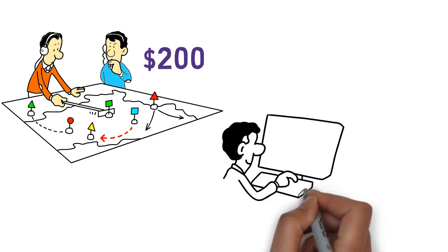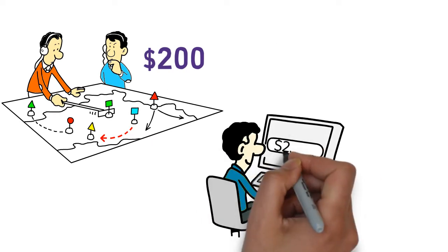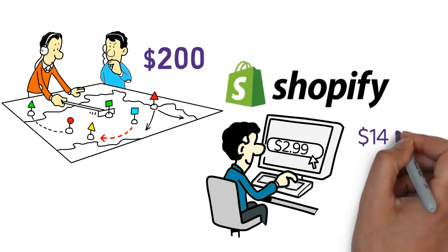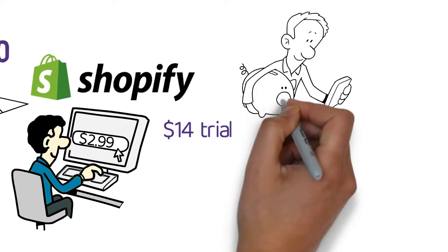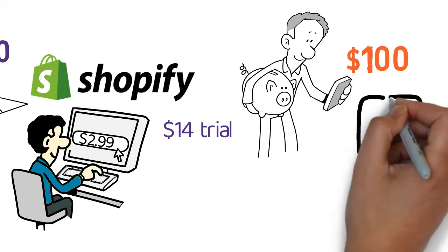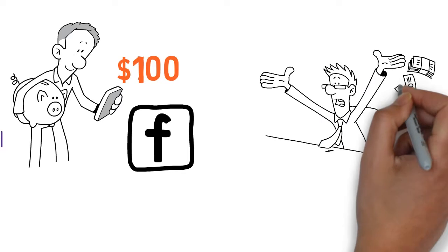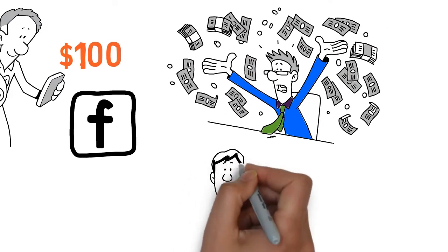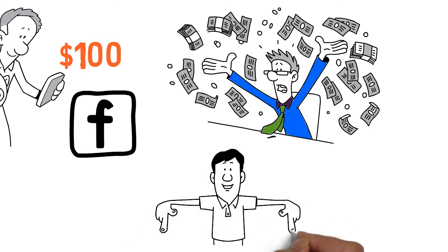He got a domain name for $2.99 a year and set up a Shopify account with a $14 trial. He said the most expensive part was when he spent $100 a day on Facebook ads. On the first day the website launched, Chapman lost money. He decided he was selling the wrong product and shifted his approach. You can see a picture of what his website looks like on the screen.